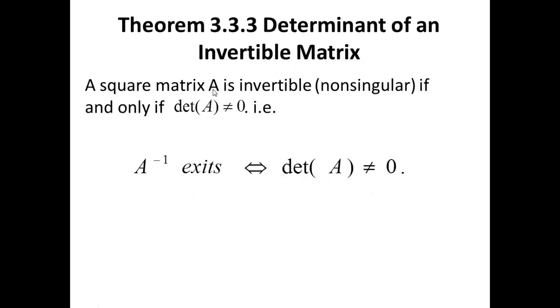Beautiful. Third, Theorem 3.3.3, Determinant of an Invertible Matrix. A square matrix A is invertible, non-singular, has an inverse, if and only if the determinant of that matrix is non-zero. A inverse exists if and only if the determinant is non-zero. It doesn't matter whether it's positive or negative. The only time that the inverse does not exist is when the determinant equals zero.